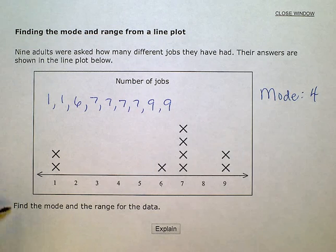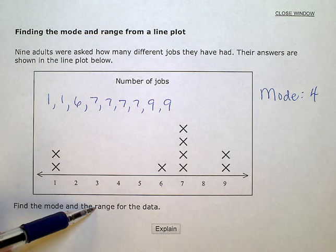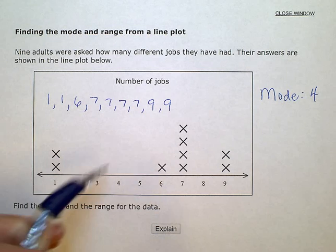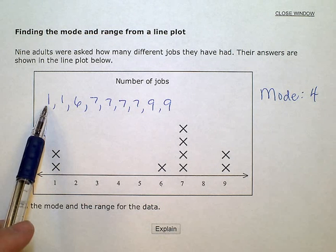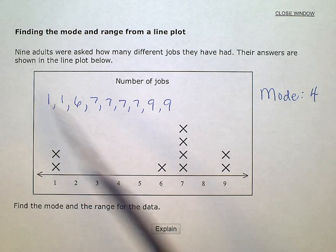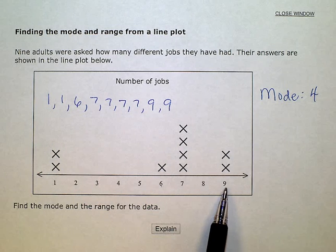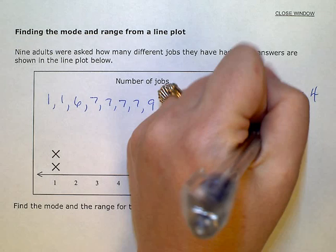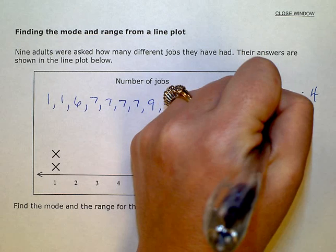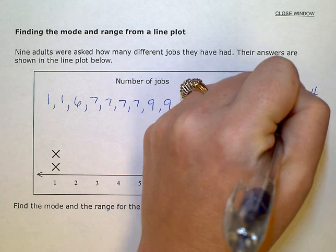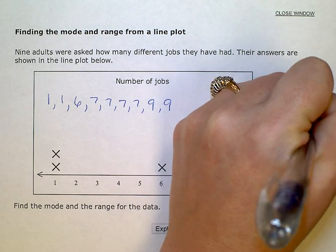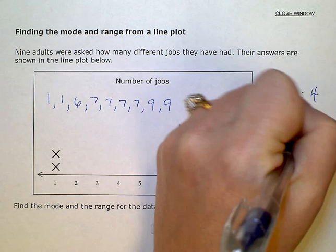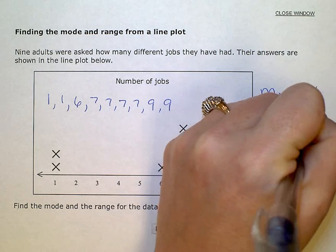The range for the data is the highest value minus the lowest value, so nine minus one, which is eight.